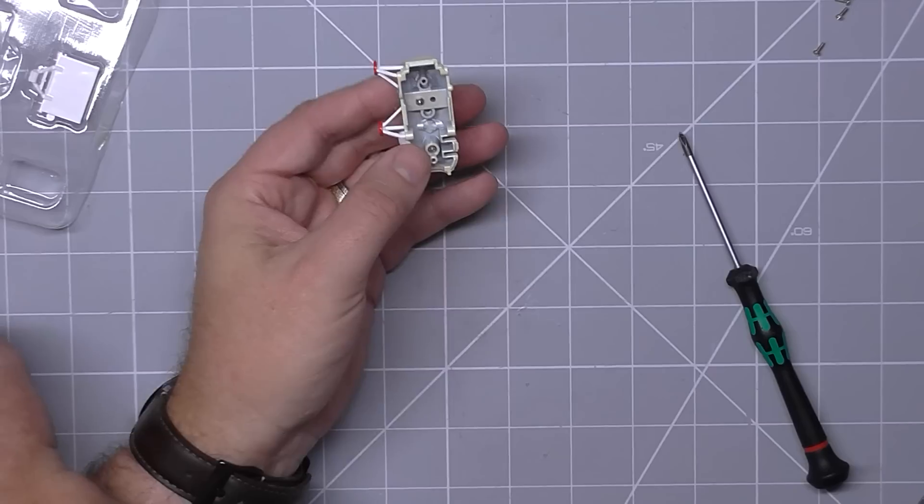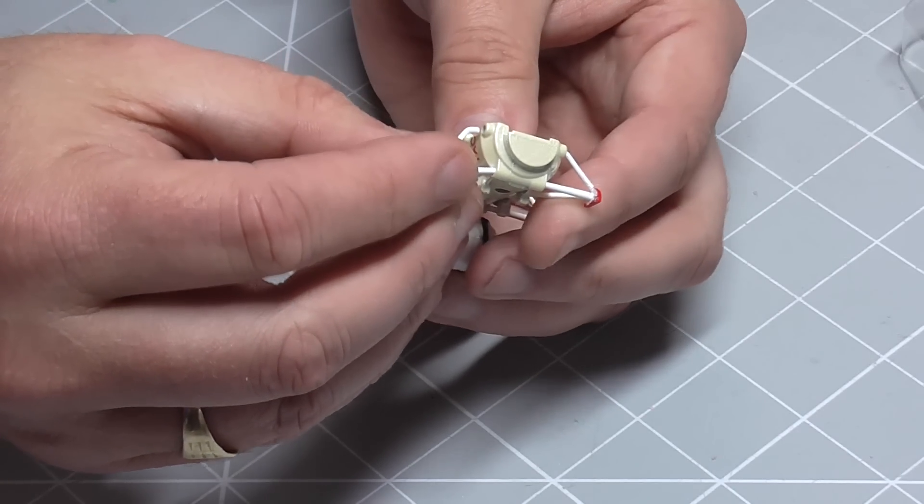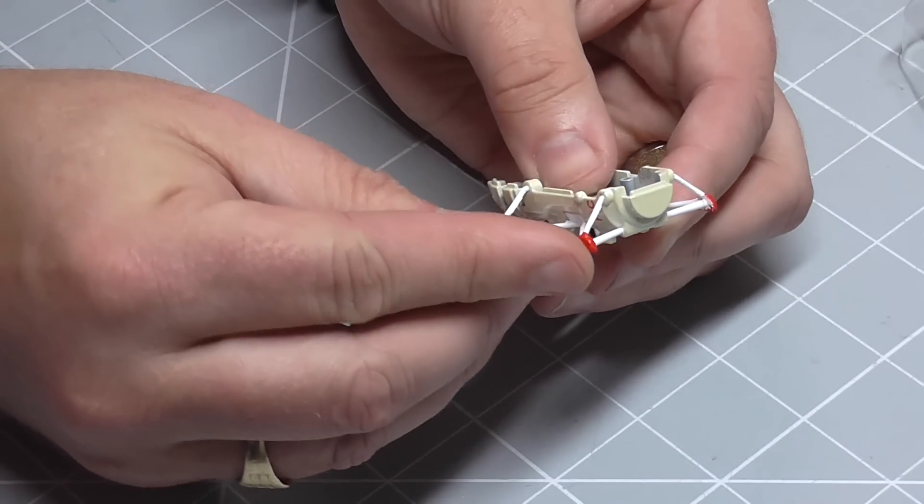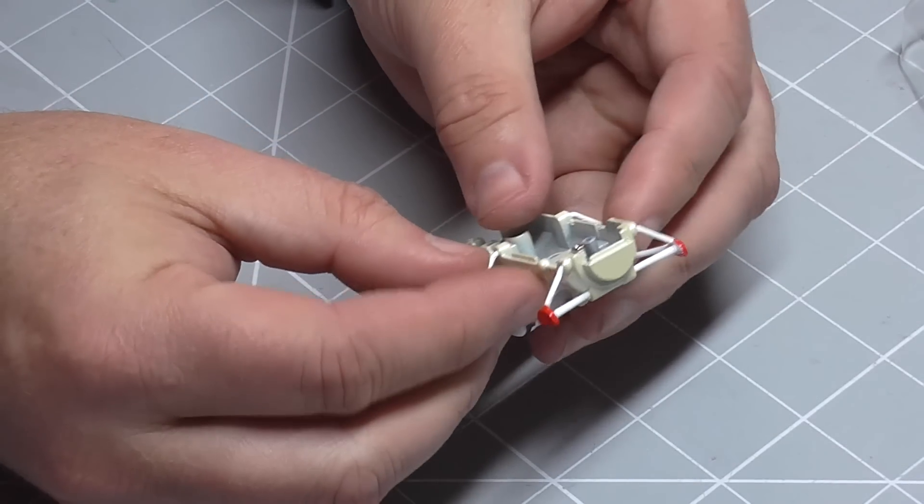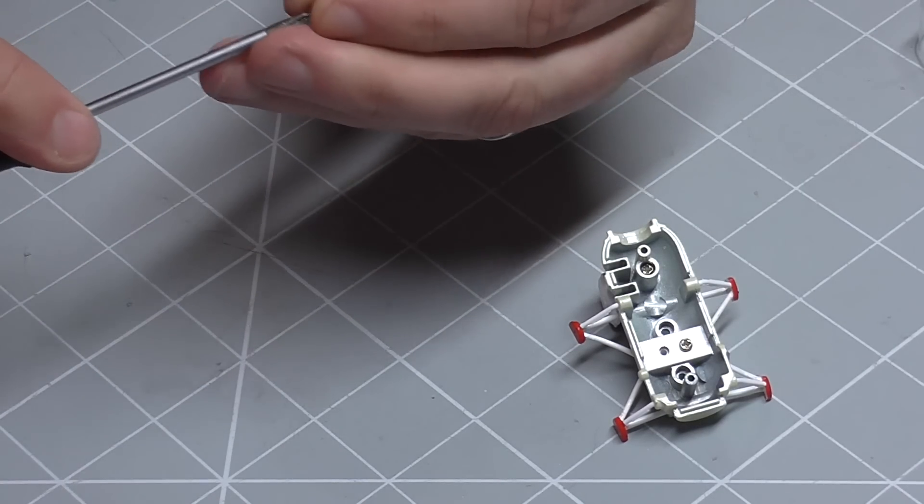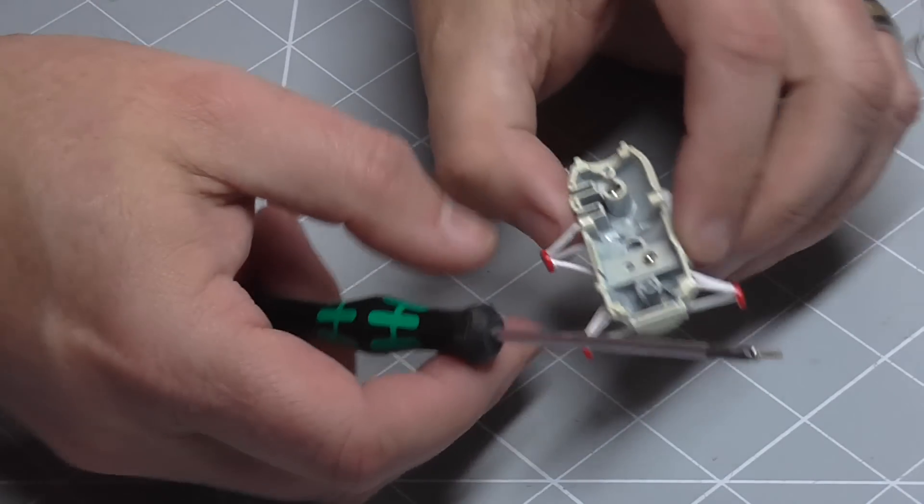And we're going to repeat that just on the other side. So again it's the longer sections go into that hole. Shorter sections on this side. Ensure that the hole is lined up in the middle. And get one of the silver screws.